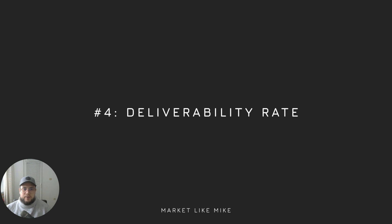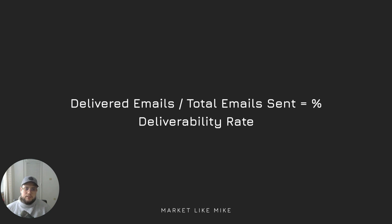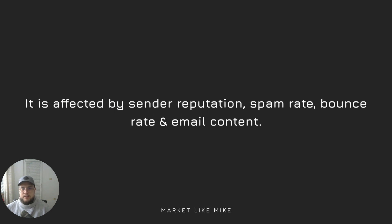Next I want to talk about deliverability rate. It is found by taking the number of delivered emails and dividing it by the total number of emails sent, giving us the deliverability rate in percentages. For example, if 450 emails were delivered out of 500 total sent, this gives us a 90% deliverability rate. This is affected by your sender reputation, spam rate, bounce rate, and your email content — if you include potentially harmful content, it could be flagged, resulting in a lower deliverability rate.